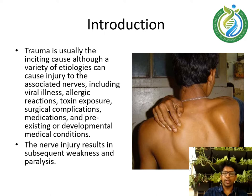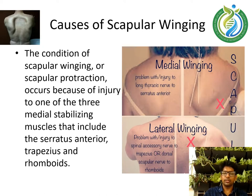Trauma is usually the inciting cause, although a variety of etiologies can cause injury to the associated nerves, including viral illness, allergic reactions, toxic exposure, surgical complications, medications, and pre-existing or developmental medical conditions. The nerve injury results in subsequent weakness and paralysis.